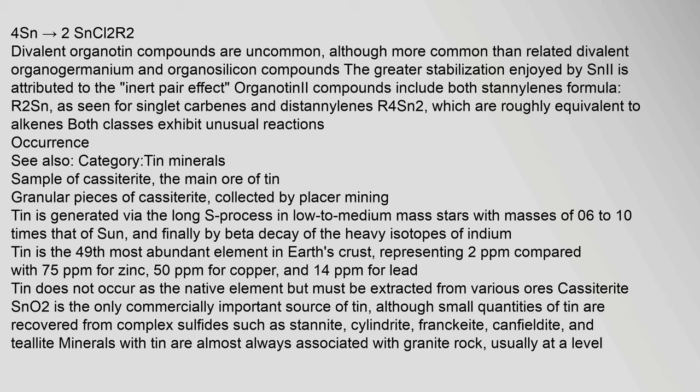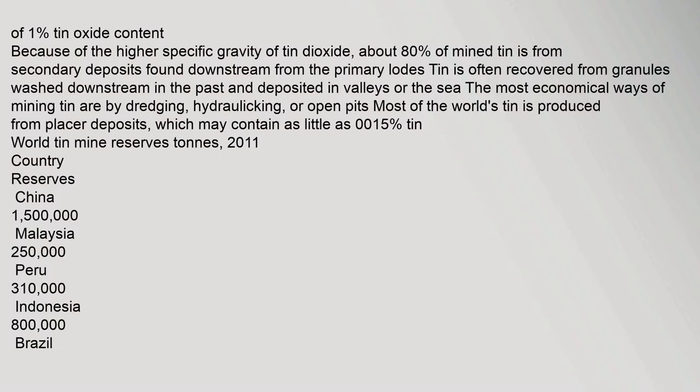Tin is generated via the long S-process in low to medium mass stars with masses of 0.6 to 10 times that of the sun, and finally by beta decay of heavy isotopes of indium. Tin is the 49th most abundant element in Earth's crust, representing 2 parts per million. About 80% of mined tin is from secondary deposits found downstream from primary loads, due to the higher specific gravity of tin dioxide. The most economical ways of mining tin are by dredging, hydraulicking, or open pits. Most of the world's tin is produced from placer deposits, which may contain as little as 0.015% tin.